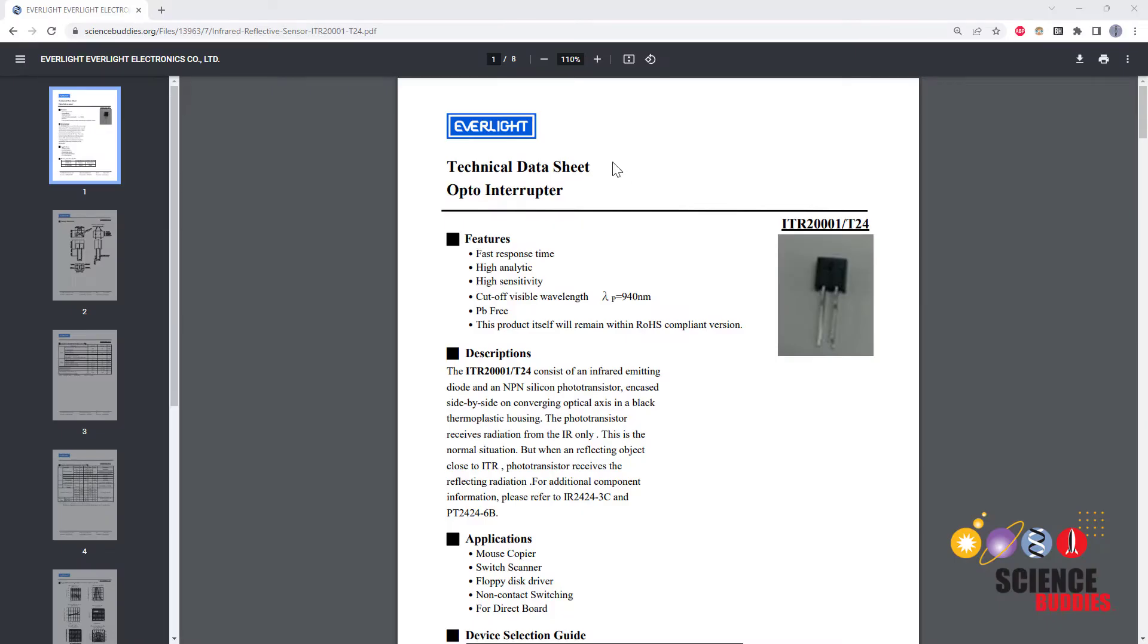Now let's take a look at the sensor's data sheet. You may notice that the data sheet calls it an opto interrupter. I have been calling it an infrared sensor. I've also seen them called reflective object sensors or IR emitter detectors. There are different types of these sensors but they all work on the same principle where they have that infrared LED to emit light and then the infrared transistor to detect the reflected light.